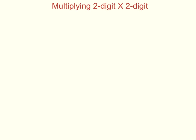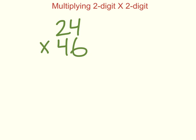In this video we are going to be talking about multiplying a two-digit number times a two-digit number. For example, 24 times 46 — we have two digits times two digits. Our first step will be to multiply the ones place value digit in the bottom number by both of the top numbers, but we do that one at a time.